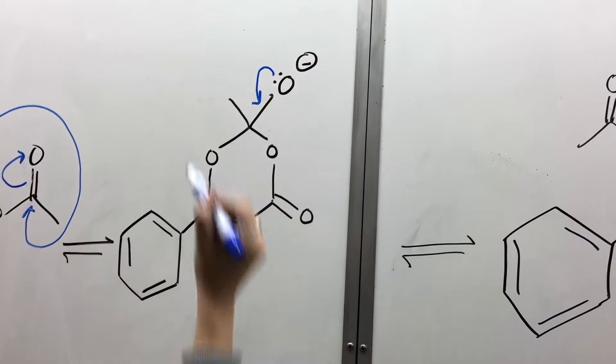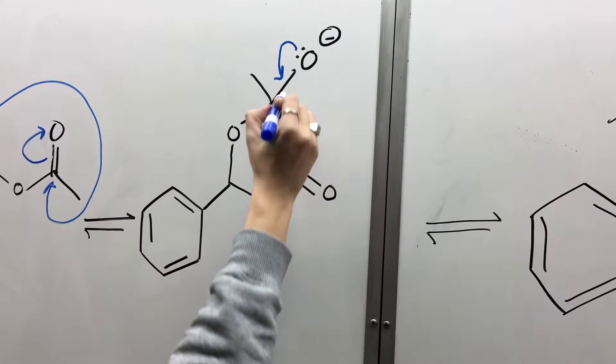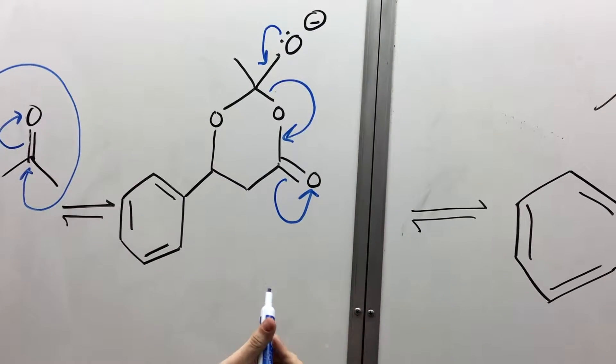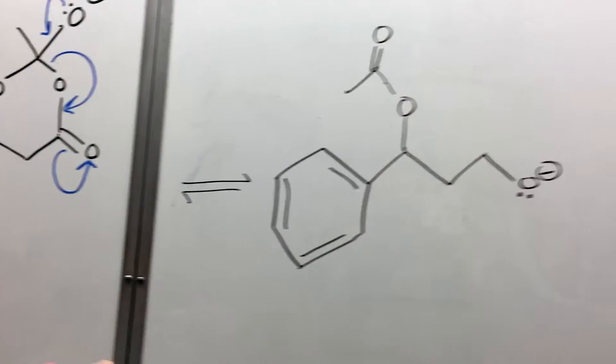This lone pair is going to swing down to reform the carbonyl. These electrons will move here, and these will move here, forming a negative charge on the oxygen.